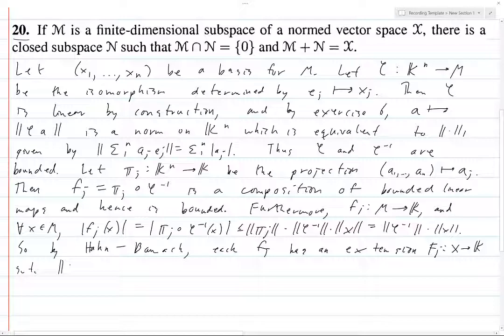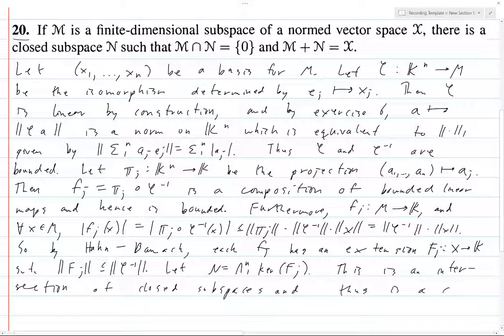Let N be the intersection of the kernels. So N is going to be the thing that we're looking for. This is an intersection of closed subspaces, and thus is a closed subspace.